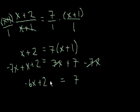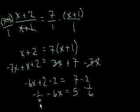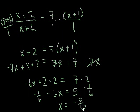Now we just get rid of the 2 by subtracting 2 from both sides, leaving us with minus 6x is equal to 5. Now it's a level 1 problem. We multiply both sides by the reciprocal of the coefficient — negative 6 — so we multiply by negative 1 over 6. The left-hand side becomes x, and the right-hand side is 5 times negative 1 over 6, which equals negative 5 over 6. And we're done. If you want to check it, substitute x equals negative 5 over 6 back into the original equation to confirm.